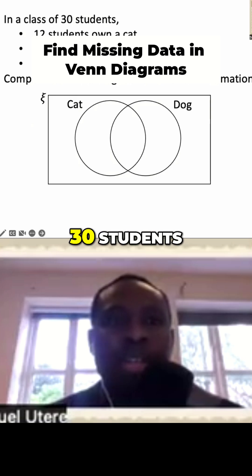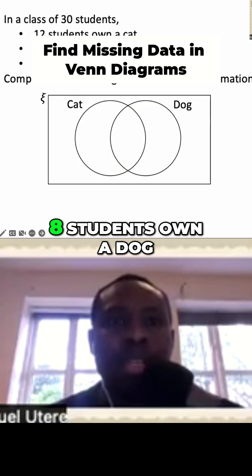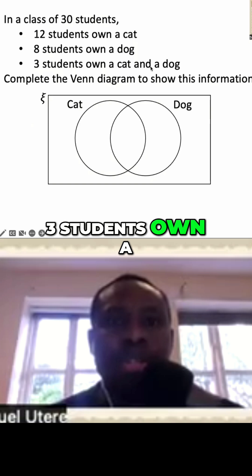Here is this question. In a class of 30 students, 12 students own a cat, eight students own a dog, three students own a cat and a dog.